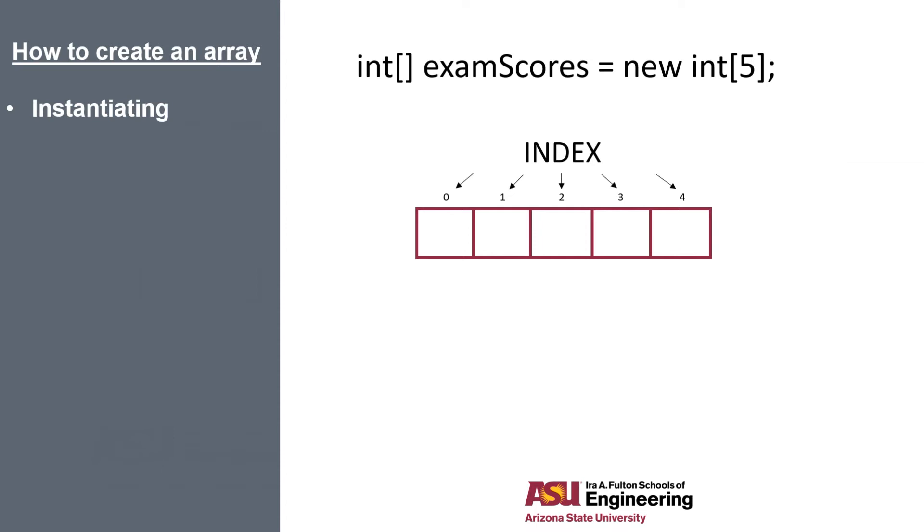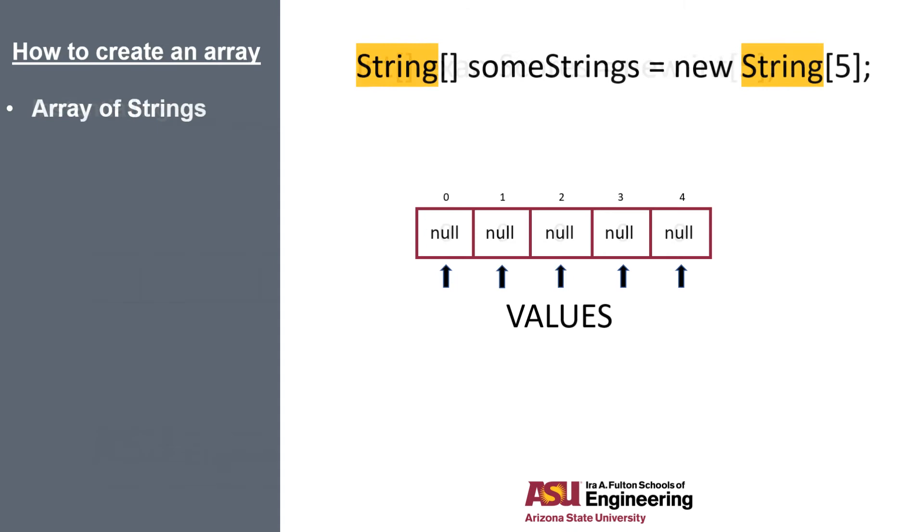We need to remember Java uses zero-based indexing. So for an array of length 5, our indices are labeled 0, 1, 2, 3, and 4. And we haven't added any elements to this array yet, so it's automatically initialized with zeros. Also, if we were to create an array of strings, our array is filled with null values.